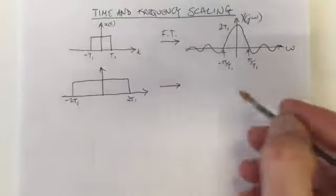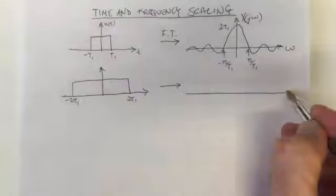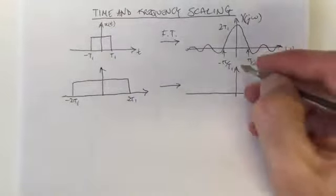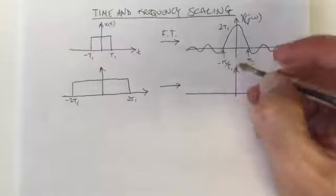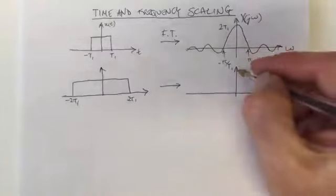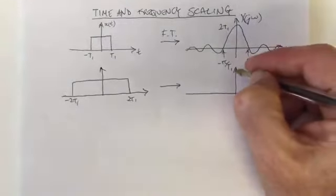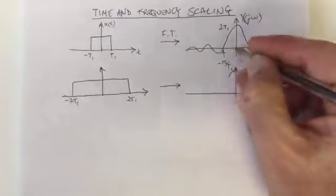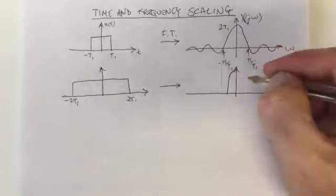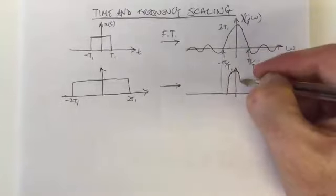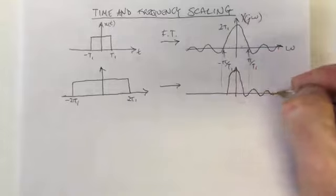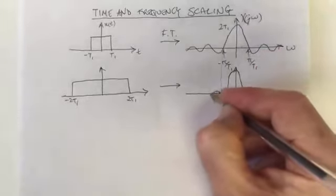then this would have an effect in the frequency domain of our waveform. Now we'd have 2T1 wherever there was T1 here. So now it would go up to 4T1, and the crossing points here would be half the original crossing points. So we would have brought our waveform in, in the frequency domain.